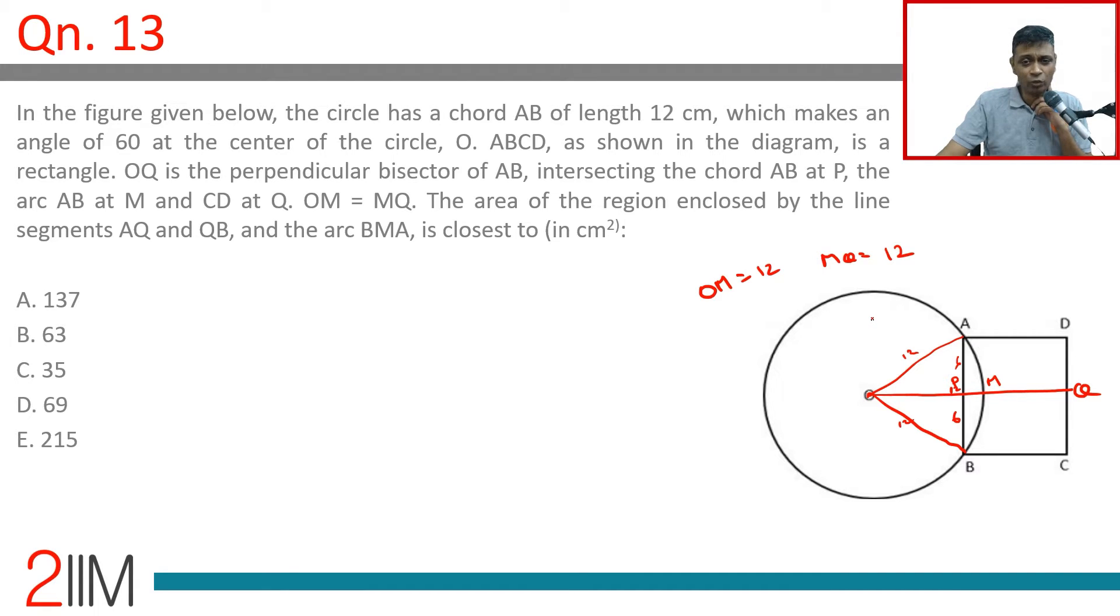The area of the region enclosed by the line segments AQ and QB and the arc BMA—so this area is closest to what? Brilliant question. Just drawing the diagram has taken us a while.